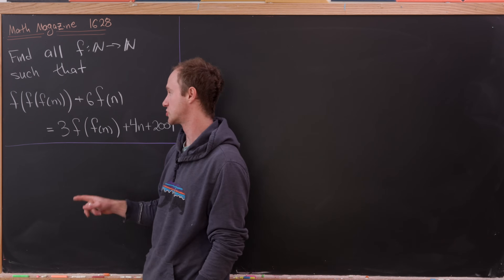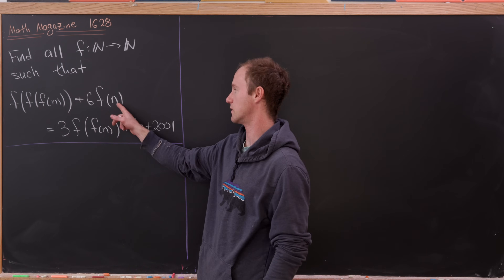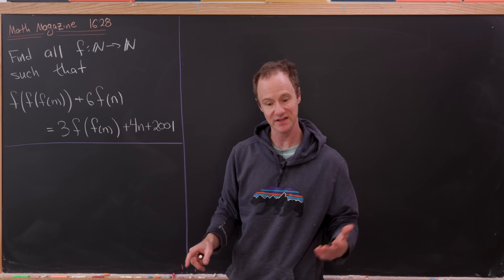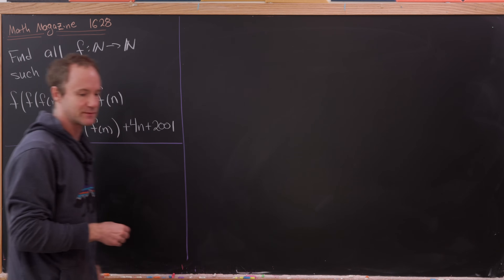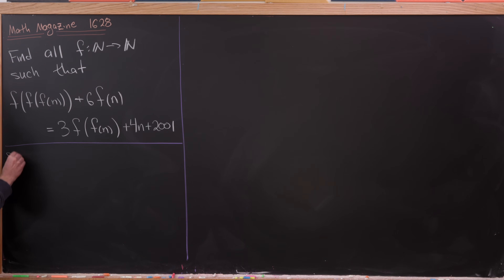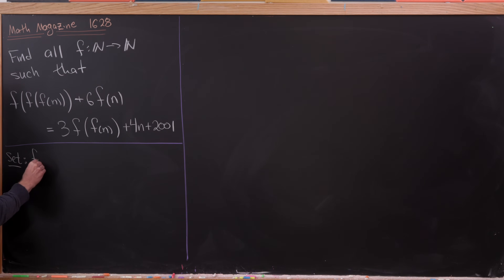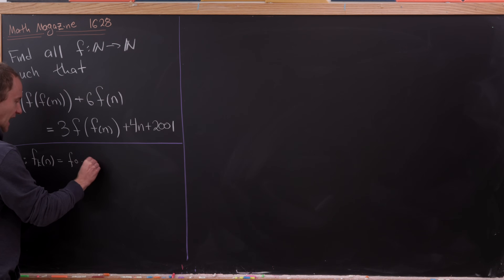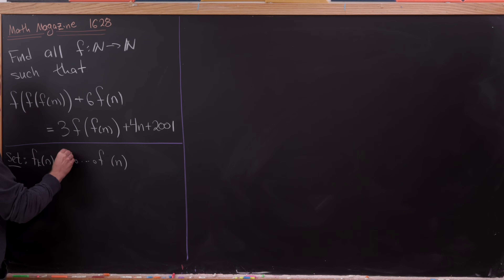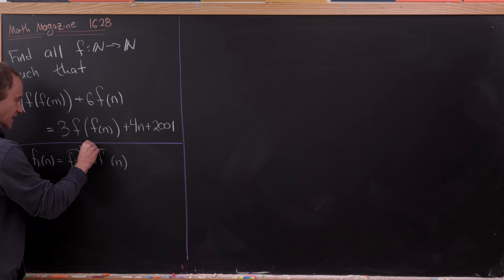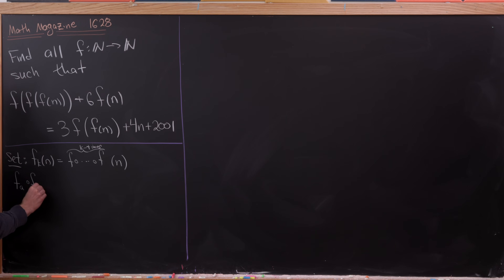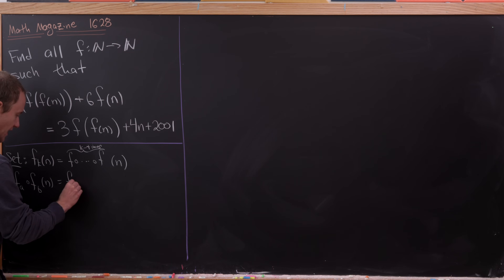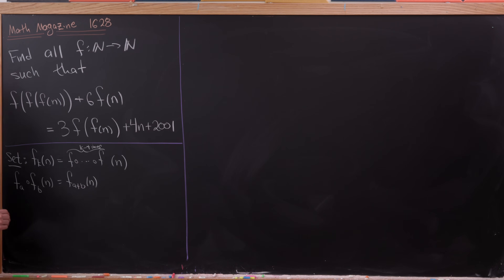So over here we've got a triple composition, here's a double composition, here's just the function by itself, and this is n, which is like a zeroth composition. First, let's introduce some notation that simplifies this. Set f_k(n) equal to the k-fold composition of f evaluated at n. And note that f_a composed with f_b of n equals f_{a+b}(n). That's pretty clear.